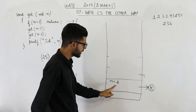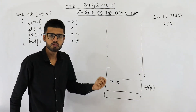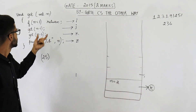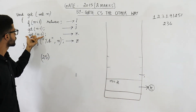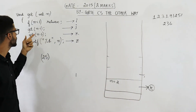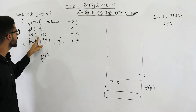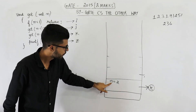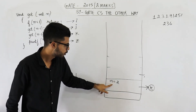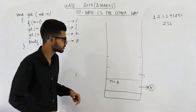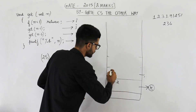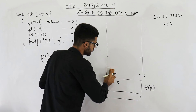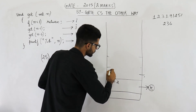Now you will return back to get(2). From where will you start? From line k. That means from here — this is the function call get(n minus 3), so get(2 minus 3) = get(minus 1). So get function is called with value minus 1.